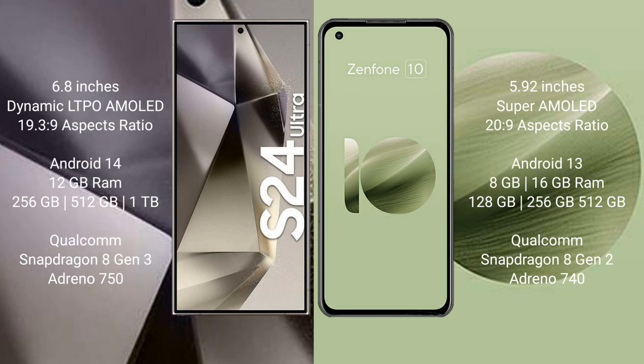Samsung Galaxy S24 Ultra comes with 12GB RAM and 256GB, 512GB, or 1TB internal storage, powered by a Qualcomm Snapdragon 8 Gen 3 processor and Adreno 750 GPU.